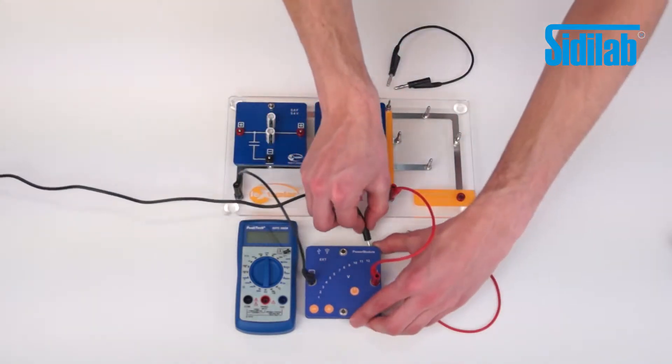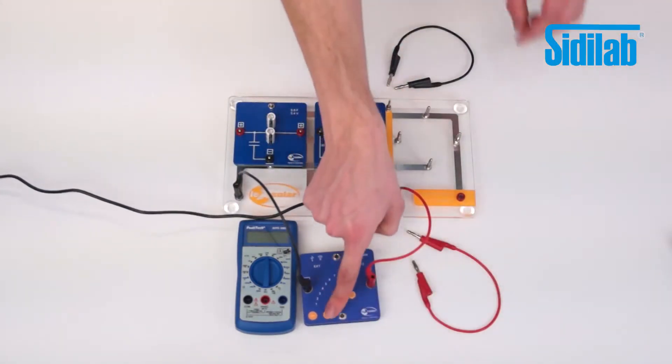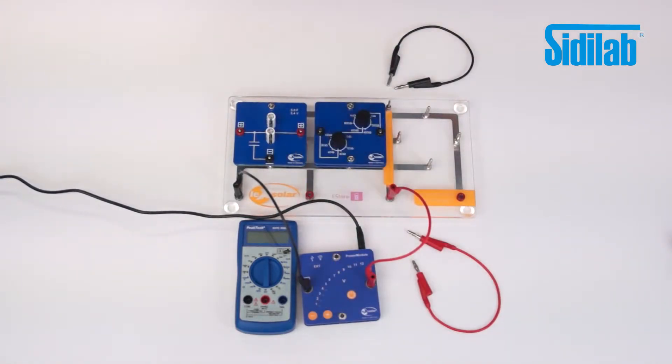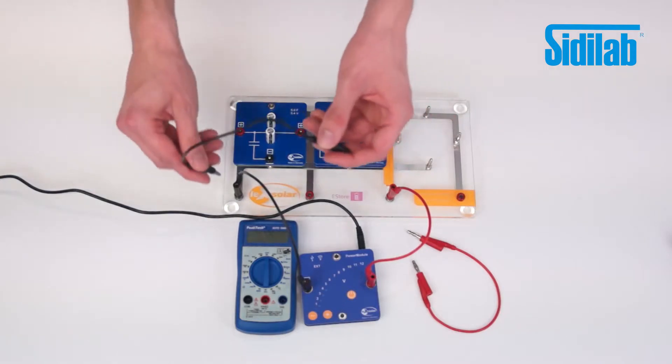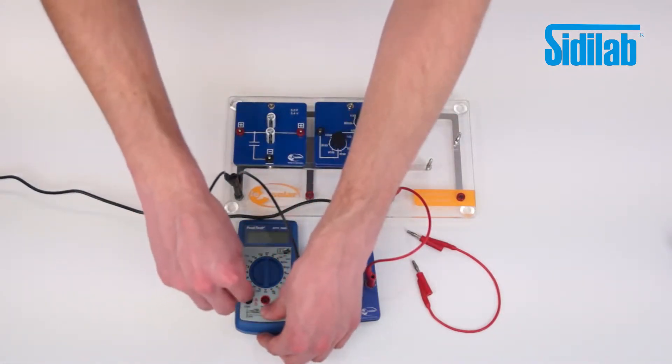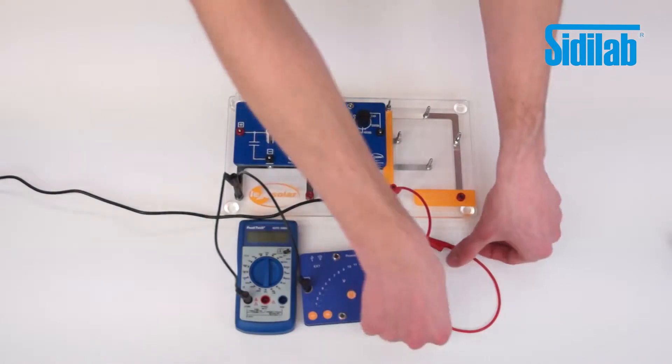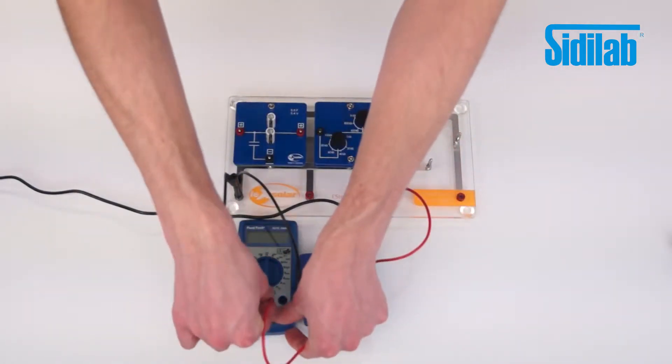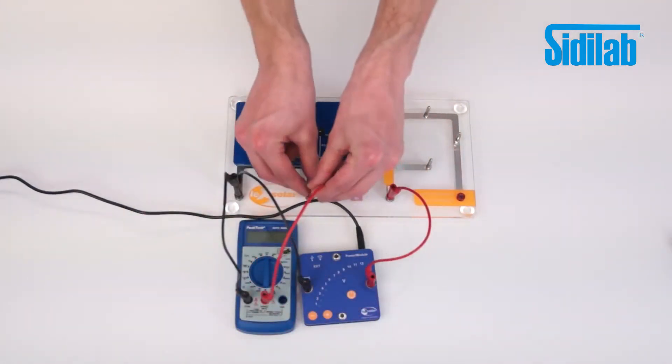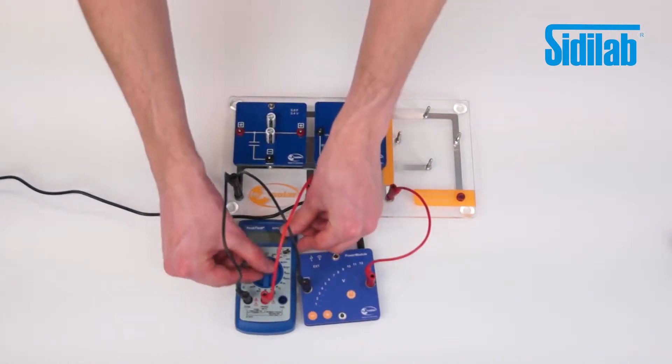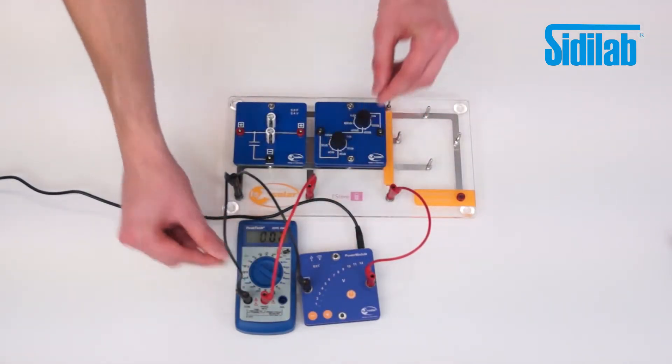Since we want to charge the capacitor to a voltage of 4 volts, we put 4 volts on the power module as well. To check the charge level we connect the capacitor to the multimeter and turn it to the voltage measurement mode. To start charging we turn on the power module.